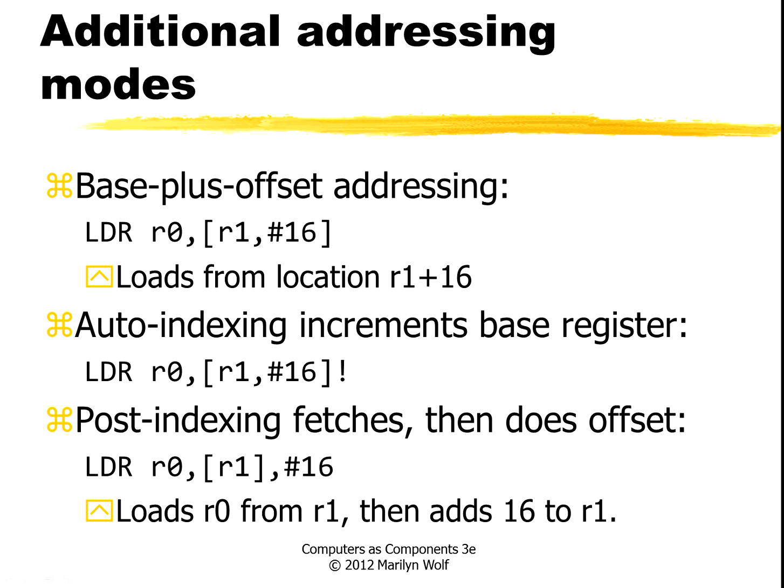There are several other addressing modes that you may find useful. For instance, there's a base plus offset addressing mode — this would add the offset 16 to the contents of register R1 and use that as an address. There's also auto-indexing, where this exclamation point would increment the base register. And then there's a post-indexing fetch, which fetches first and then applies the offset.